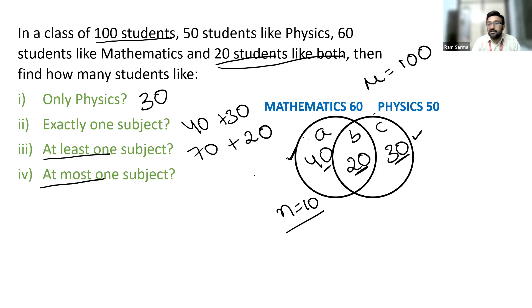At most one subject. At most one. What does it mean? Exactly one plus less than one. Exactly one is 70 plus less than one. As we discussed earlier, n is equal to 10.